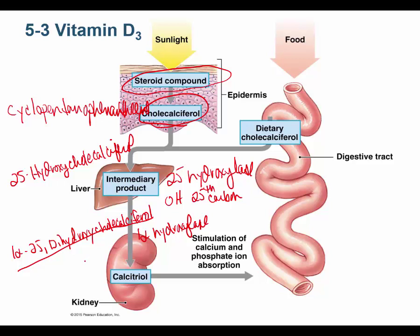Active vitamin D goes to the intestines and signals them to reabsorb calcium. The active form — 1-alpha 25-dihydroxycholecalciferol — also has another name: calcitriol. 'Cholecalciferol' already has one OH group, and we've added two more at the 1-alpha and 25 positions, making three OH groups total — hence 'triol.' So 1-alpha 25-dihydroxycholecalciferol is called calcitriol, and that is active vitamin D.